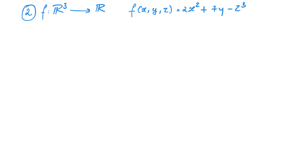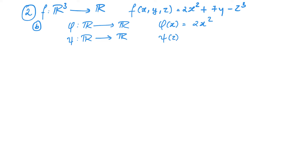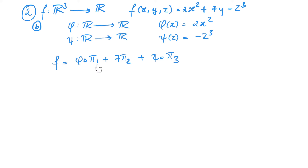Let us now prove the continuity of f using limit theorems. Let π₁, π₂, π₃ be projections to the x, y, and z axes respectively. Define φ(x) = 2x² and ψ(z) = −z³. Then f = φ∘π₁ + 7π₂ + ψ∘π₃. The continuity of φ and π₁ gives that φ∘π₁ is continuous. The continuity of the constant function 7 and π₂ gives that 7π₂ is continuous. Similarly ψ∘π₃ is continuous, and thus the sum of these three continuous functions is continuous, i.e. f is continuous.